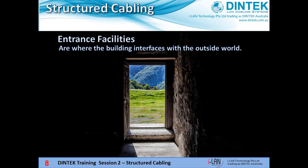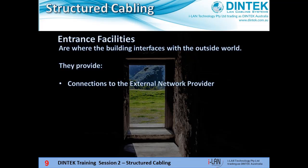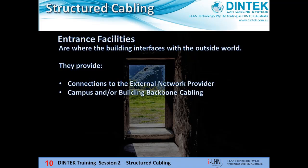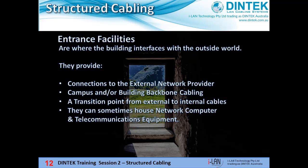They consist of various types of telecommunications cables, including private optic fibre cables and public telephone carrier networks, where they enter a building before continuing on to the equipment rooms — where we'll find our servers, routers, and PABX systems. Entrance facilities provide connections to the external network provider, a termination point for campus and building backbone cabling, a transition point from external to internal cables, and can even sometimes house network and telecommunications equipment.